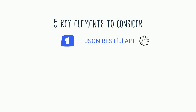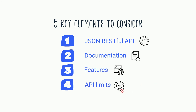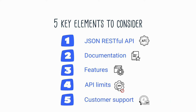Now let's see the key elements to consider for choosing the right video API. A JSON-RESTful API can be easily accessed from any suitable server using any programming language. Make sure you have access to comprehensive documentation and that the features provided via API calls match your business needs. Review the limits that come with your OVP subscription to make sure it suits your needs, and make sure you have access to 24/7 support and professional services.